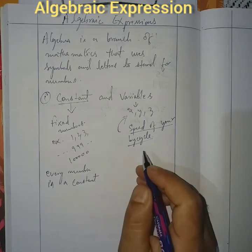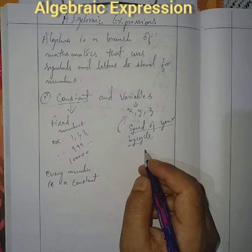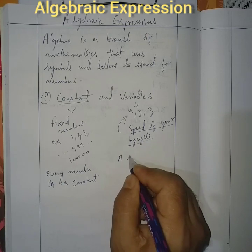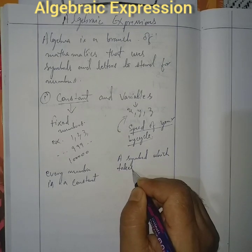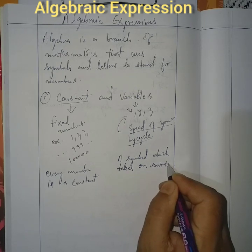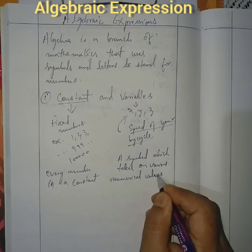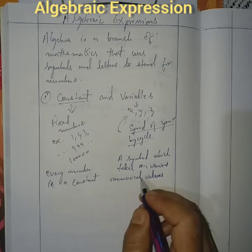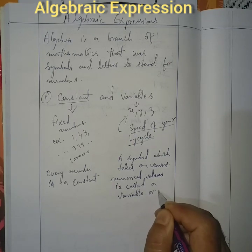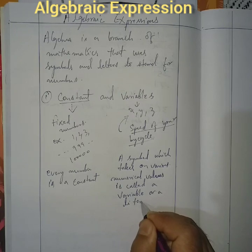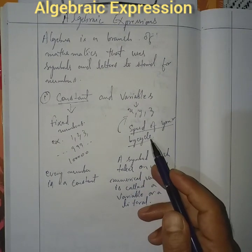Variables are generally represented by letters of English alphabets like X, Y, Z, A, B, C, etc. A symbol which takes on various numerical values, changing according to time and situations, is called a variable or literal. For example, speed changes according to time.